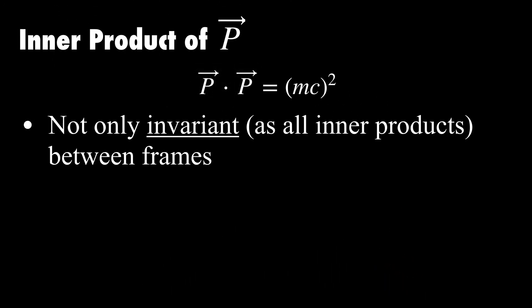So this leads to a few important conclusions. Firstly, this inner product is invariant. However, that really shouldn't be that surprising because all inner products in Minkowski space are invariant under a Lorentz transform. That's like the reason that they are useful. But what is interesting is that because this inner product always equals this constant, that means that the inner product is a conserved quantity as well, which makes it incredibly useful when solving problems.